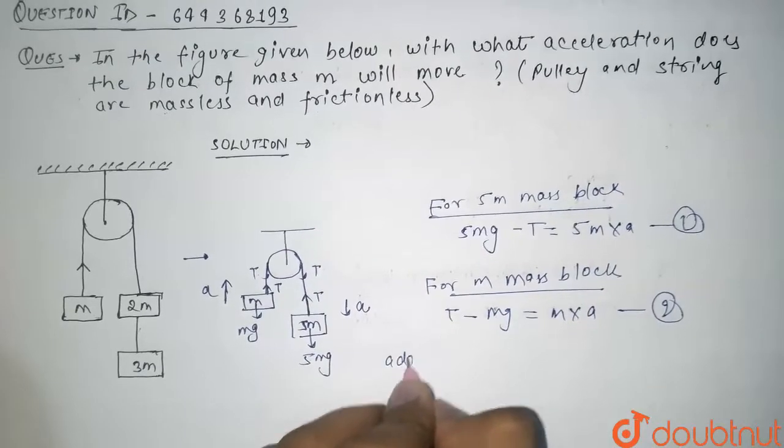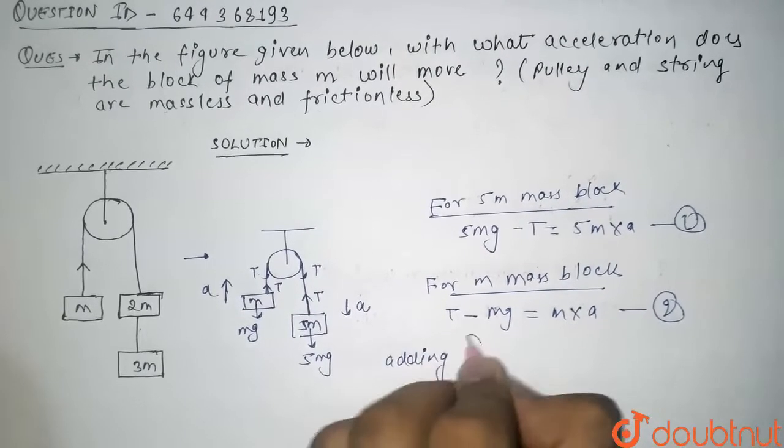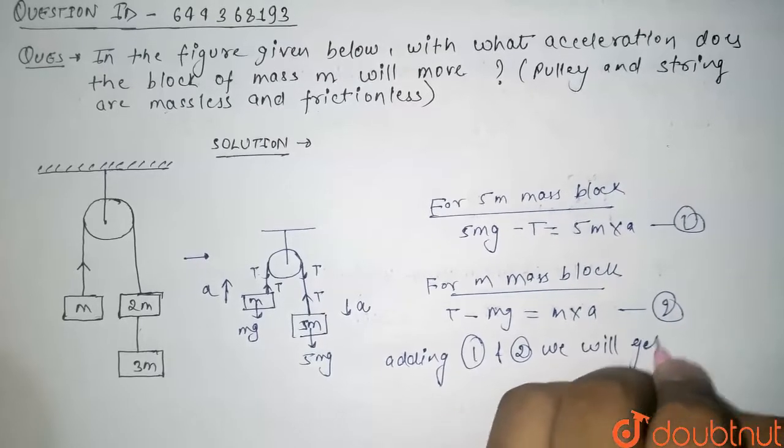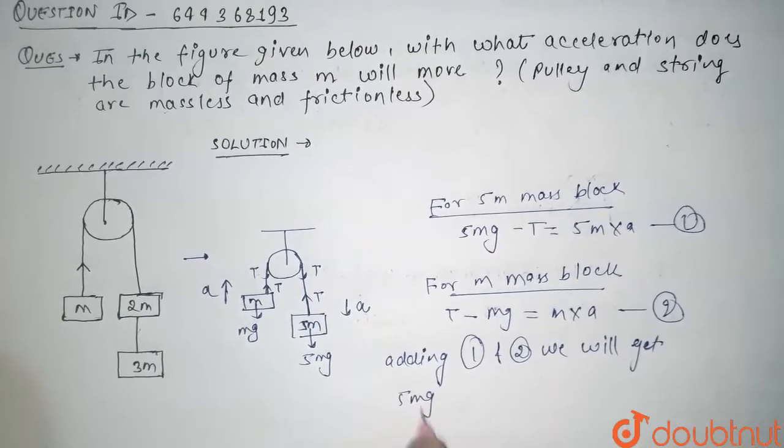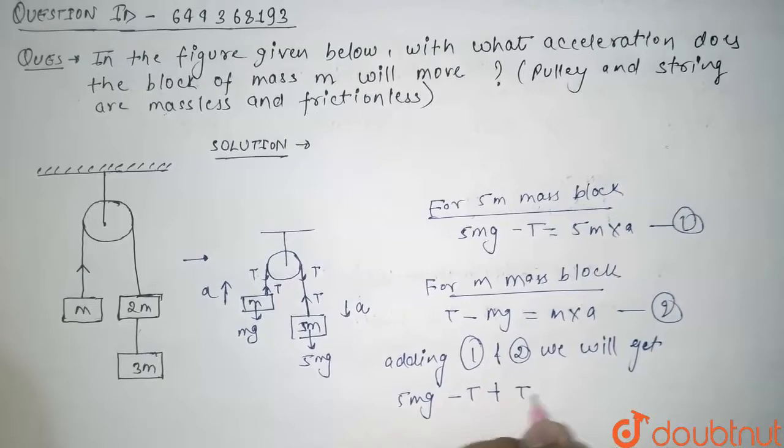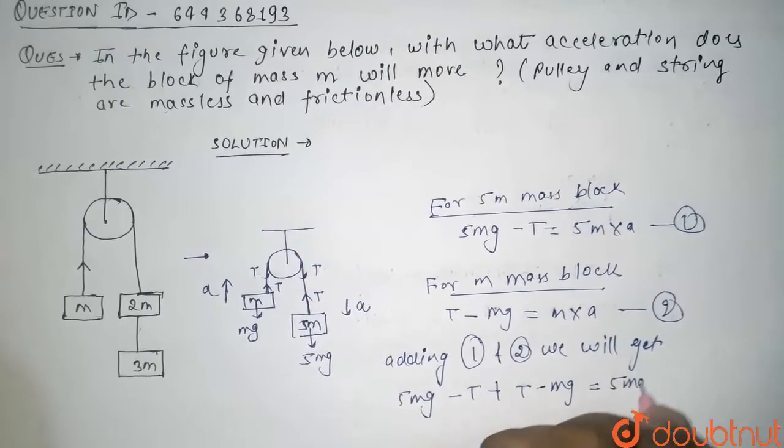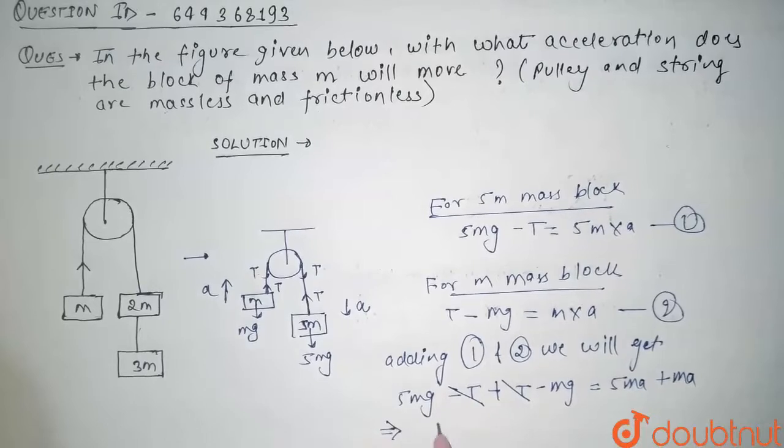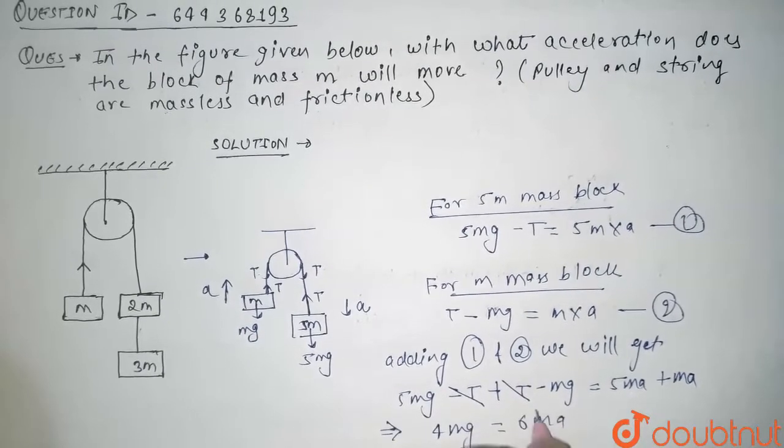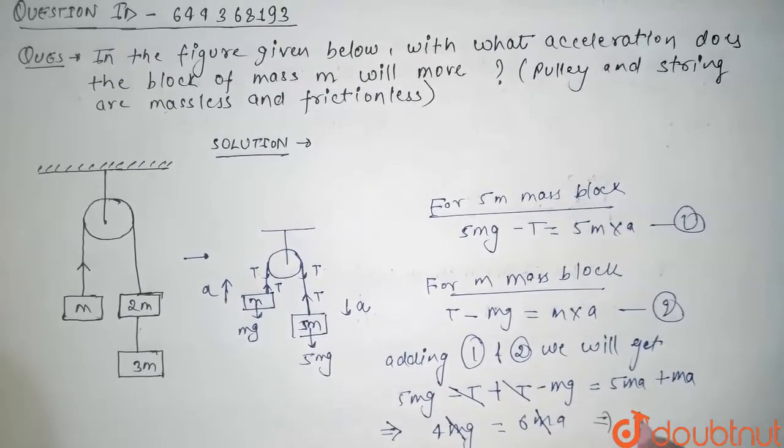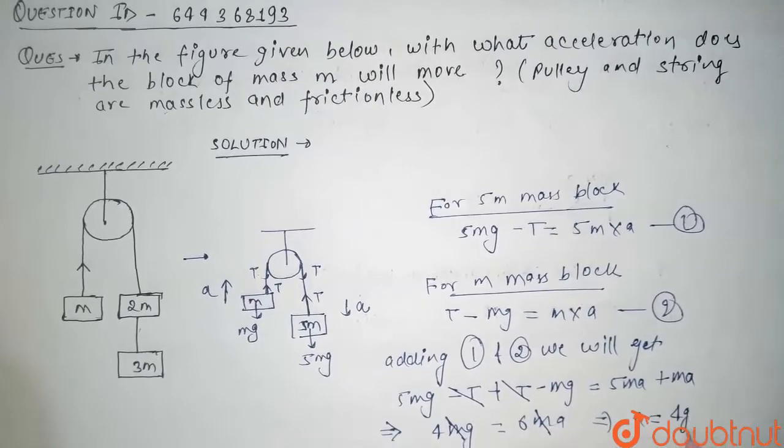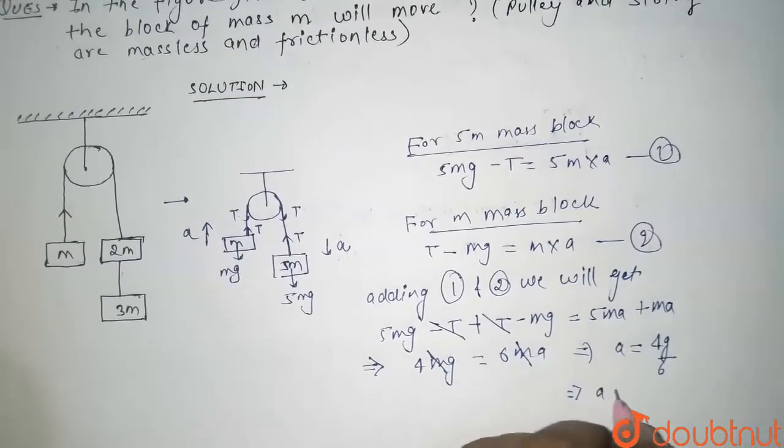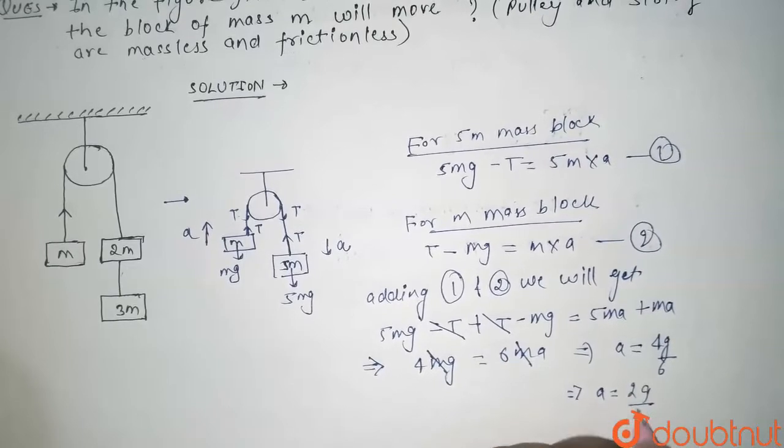Adding first and second, we will get 5mg minus tension plus tension minus mg is equal to 5ma plus ma. Here tension and tension will cancel, and this comes out to be 4mg is equal to 6ma. From here m and m cancel, and acceleration comes out to be 4g by 6, or acceleration comes out to be 2g by 3.